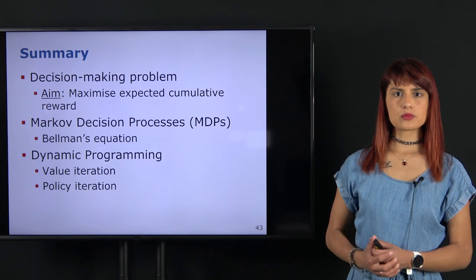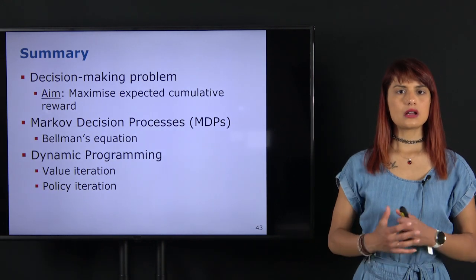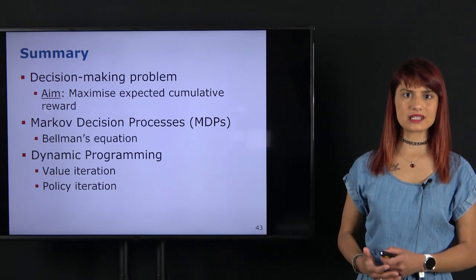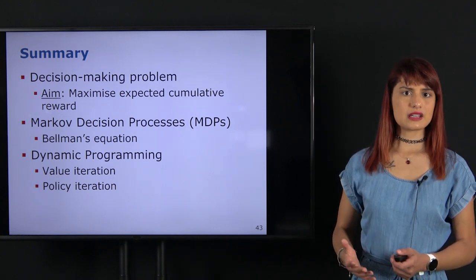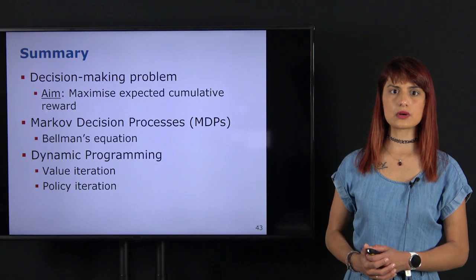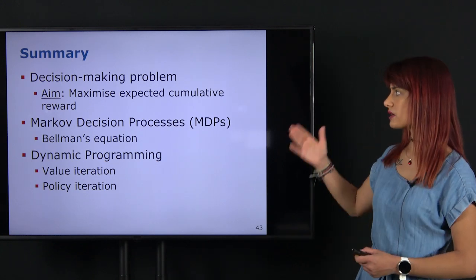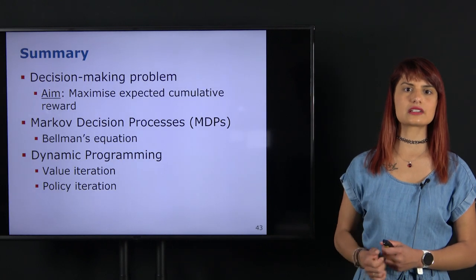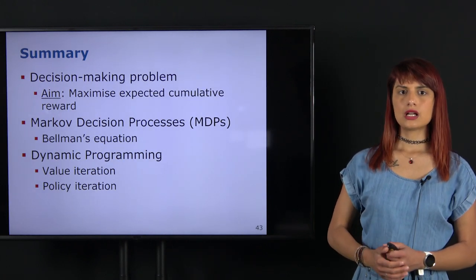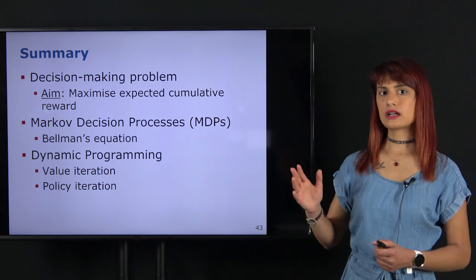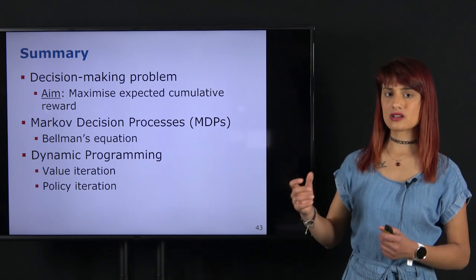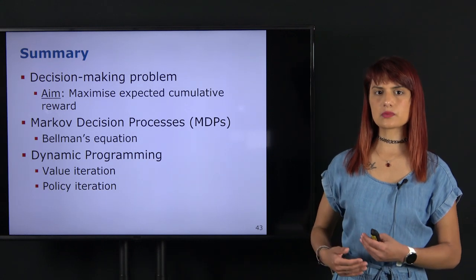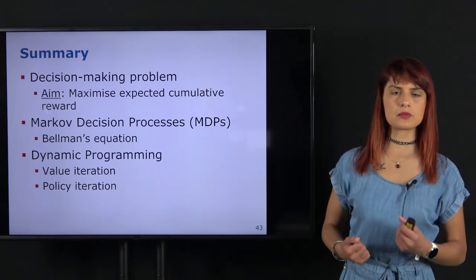That brings us to the conclusion of this lecture. In the first part we looked at the decision-making problem and its key components. The general aim of sequential decision-making is to maximize the expected cumulative reward that the agent can get from a particular state. Our mission defines what the reward looks like, and the decision-making algorithm tries to get as much reward as possible so that the mission can be more successful.